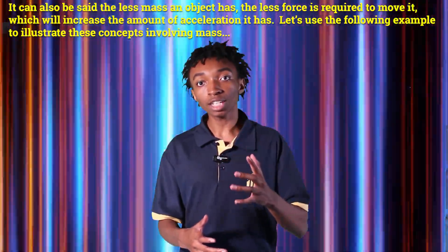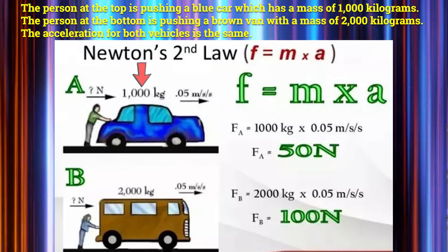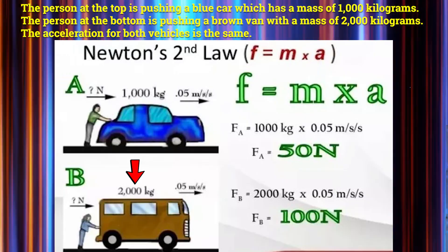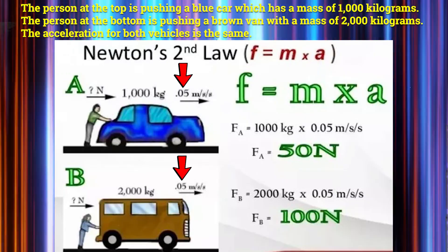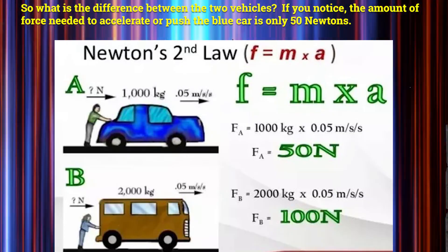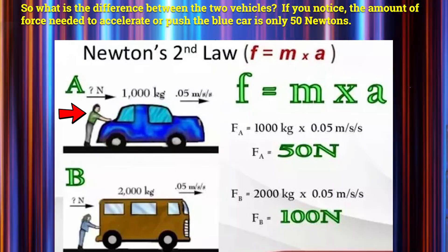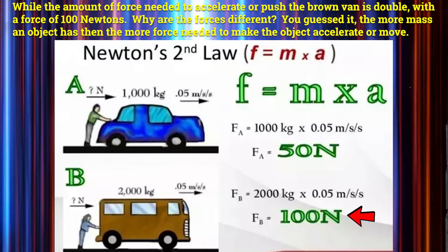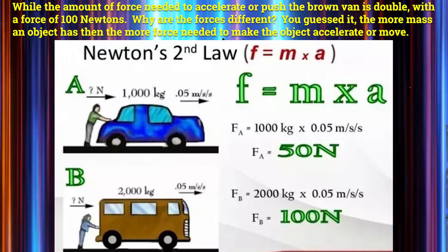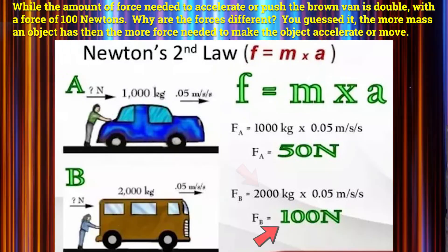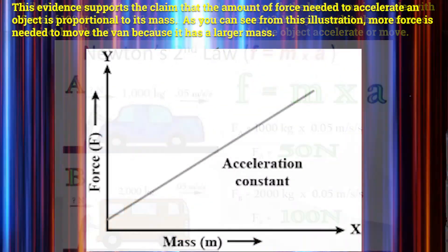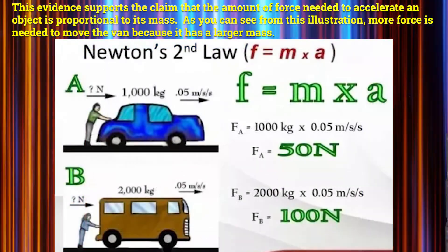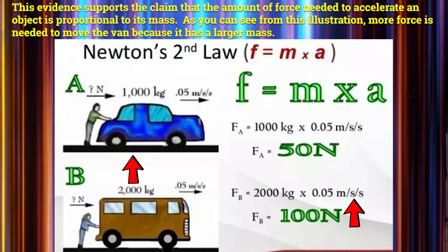Let's use the following example to illustrate these concepts involving mass. The person at the top is pushing a blue car which has a mass of 1,000 kilograms. The person at the bottom is pushing a brown van with a mass of 2,000 kilograms. The acceleration for both vehicles is the same. The amount of force needed to push the blue car is only 50 newtons, while the amount of force needed to push the brown van is double, with a force of 100 newtons. The more mass an object has, the more force is needed to make it accelerate. This supports the claim that the amount of force needed to accelerate an object is proportional to its mass.